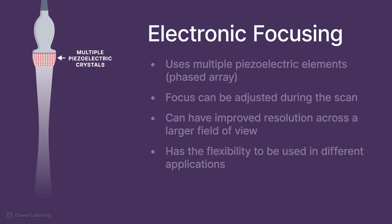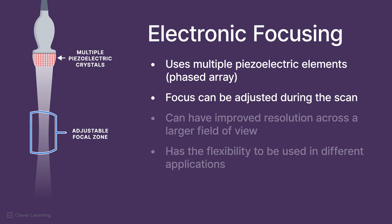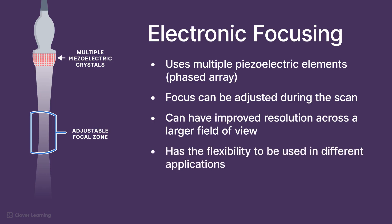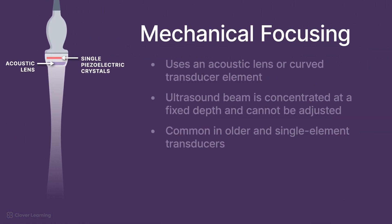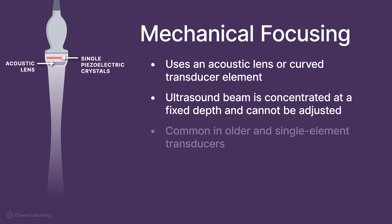Electronic focusing is achieved using multiple piezoelectric elements in the transducer in a controlled sequence, often called phased array technology. Electronic focusing can be adjusted during the scan, can have improved resolution across a larger field of view, and has the flexibility to be used in different applications. Mechanical focusing is achieved by using an acoustic lens or curved transducer element to concentrate the ultrasound beam at a fixed depth. So it cannot be adjusted, is less flexible, but is common in older and single element transducers.